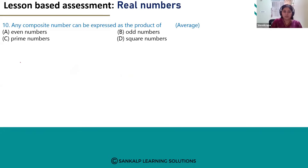Let's see an example. For example, 16. This can be expressed as the product of prime numbers. What are prime numbers? 2, 3, 5, 7, 11, 13, etc.